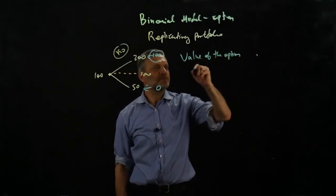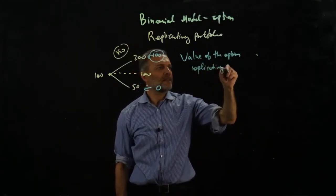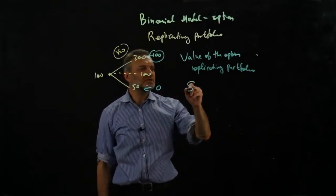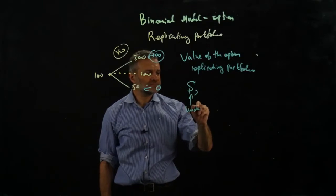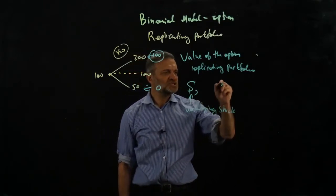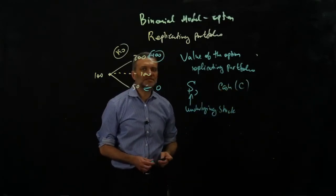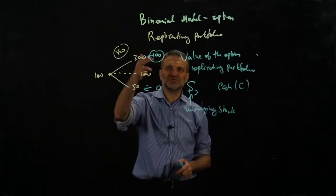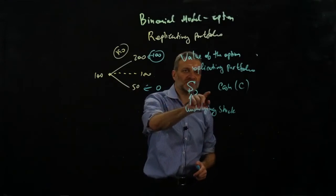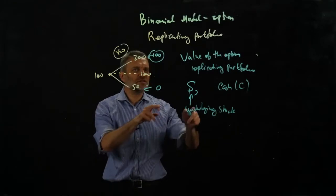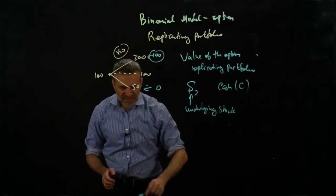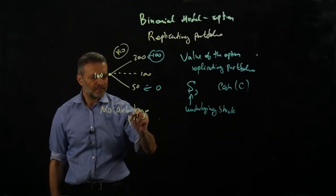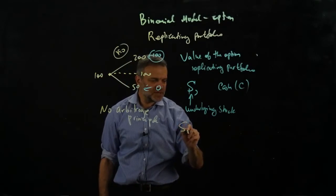In this setup, what you want to do is value the option using the replicating portfolio. What does that mean? You want to construct — replicate — the option using S, your underlying stock, and cash, abbreviated C. The reason is that you know the price of the stock today and you know the price of the cash today. If you have a replicating portfolio that exactly replicates the future cash flows using the stock and cash, the price of this portfolio will be exactly the price of the option.